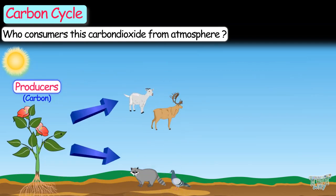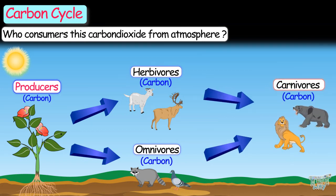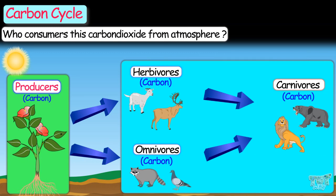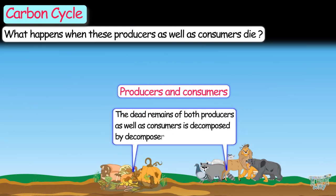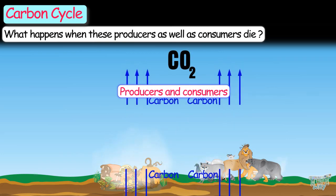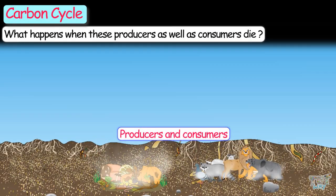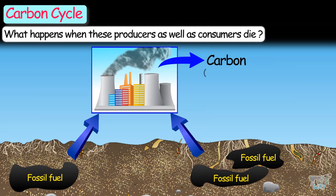These producers are consumed by the consumers — all herbivores and omnivores — and then carbon becomes a part of these herbivores and omnivores. These herbivores and omnivores are consumed by carnivores, and thus carbon becomes a part of the carnivores. So carbon becomes a part of all the producers and consumers. When these producers and consumers die, their dead remains are decomposed by decomposers — returning carbon to the atmosphere as carbon dioxide. These dead remains, buried for thousands of years, also turn into fossil fuels, and we use them for combustion, which too releases carbon into the atmosphere.